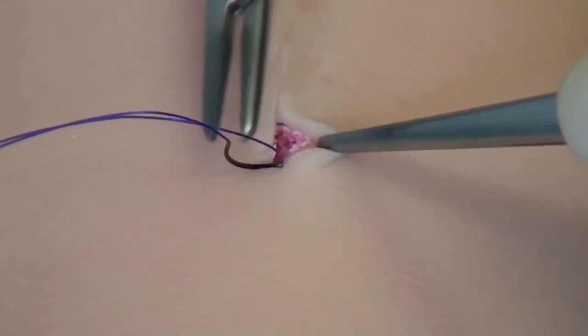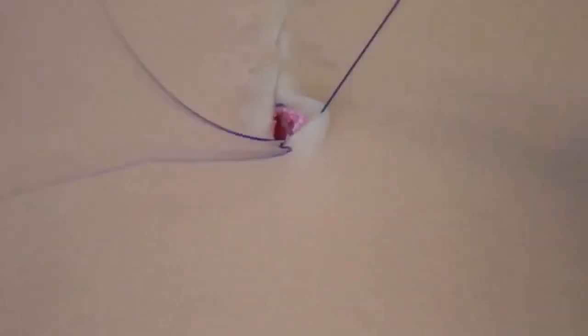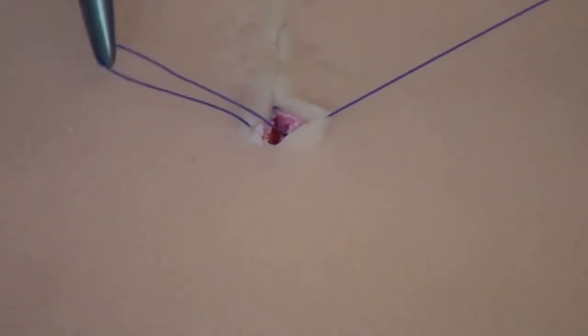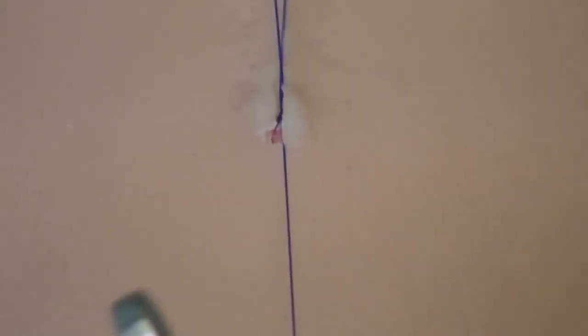In the end, a V-shaped stitch is performed. The thread is not pulled through completely. A loop is left to close the suture with a surgical knot. When tightening the knot, make sure that the thread is pulled in the direction of the incision.